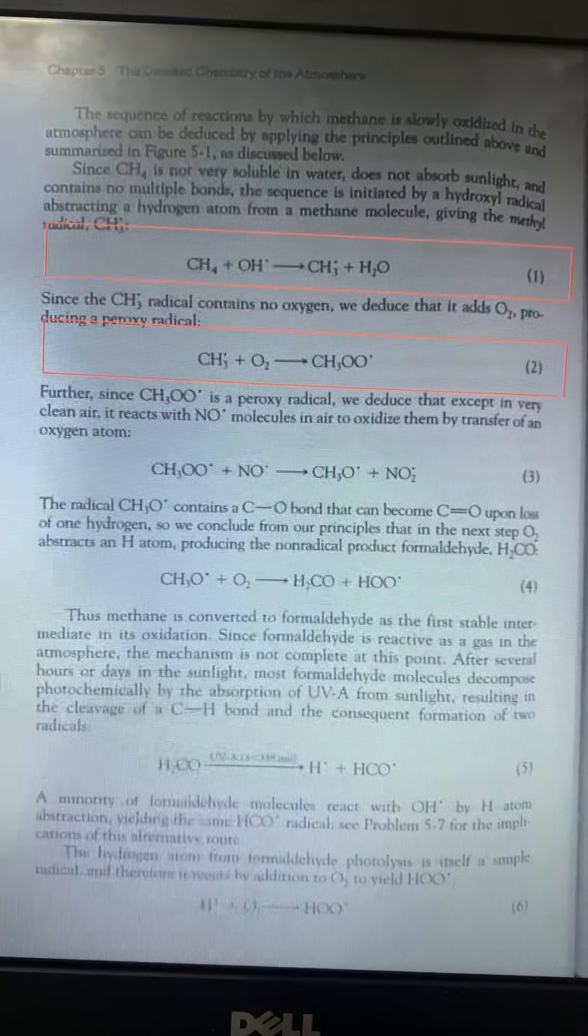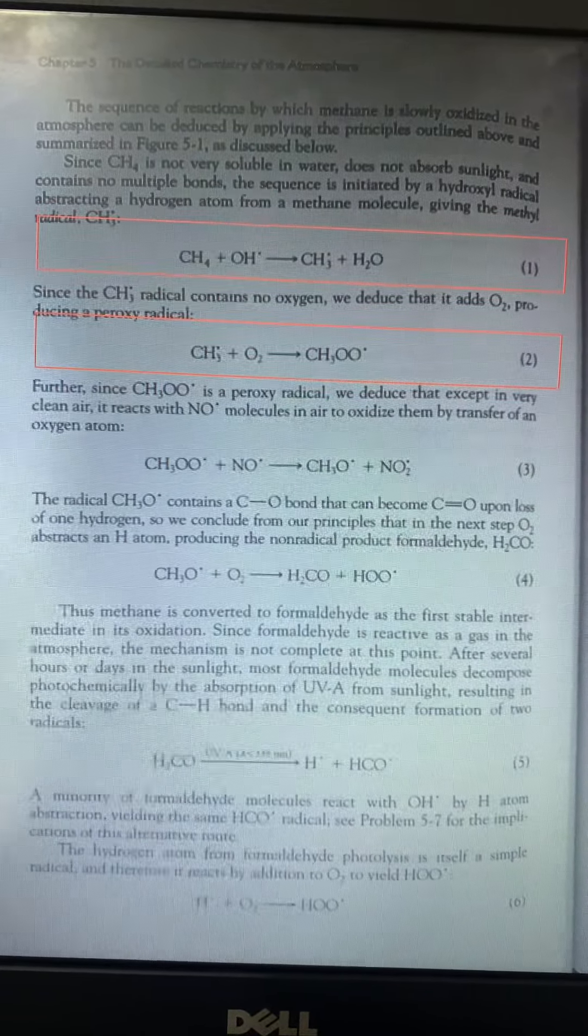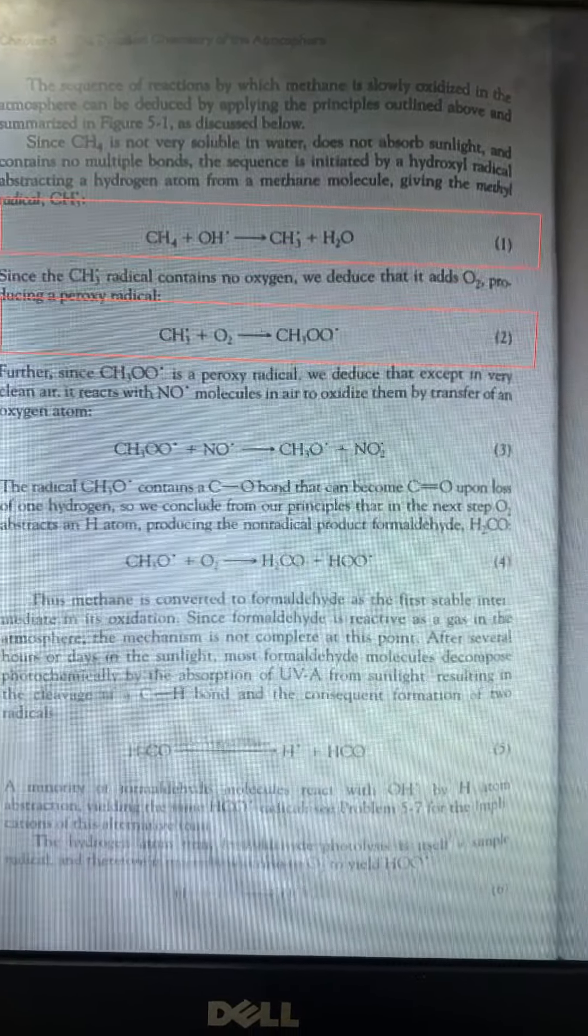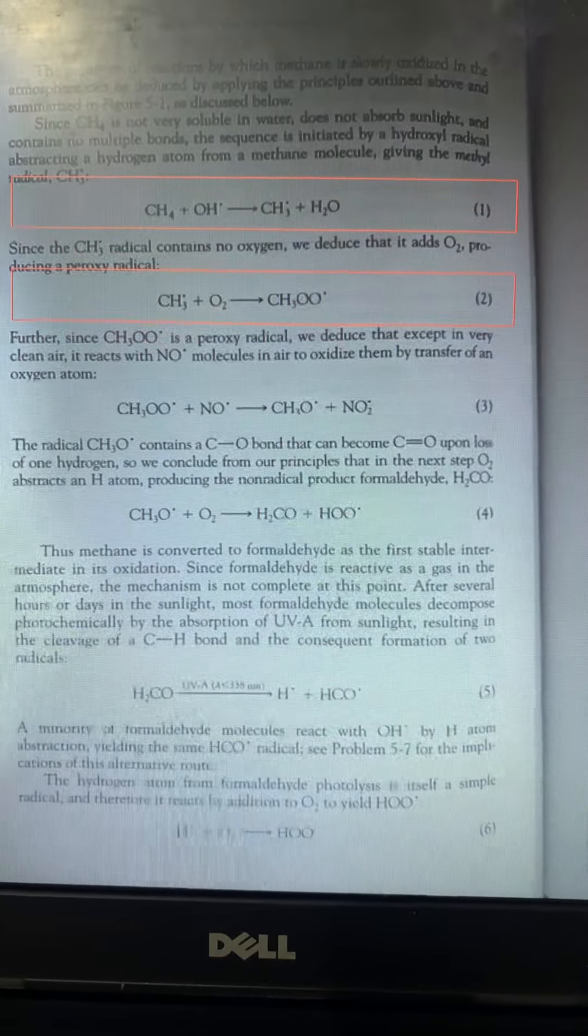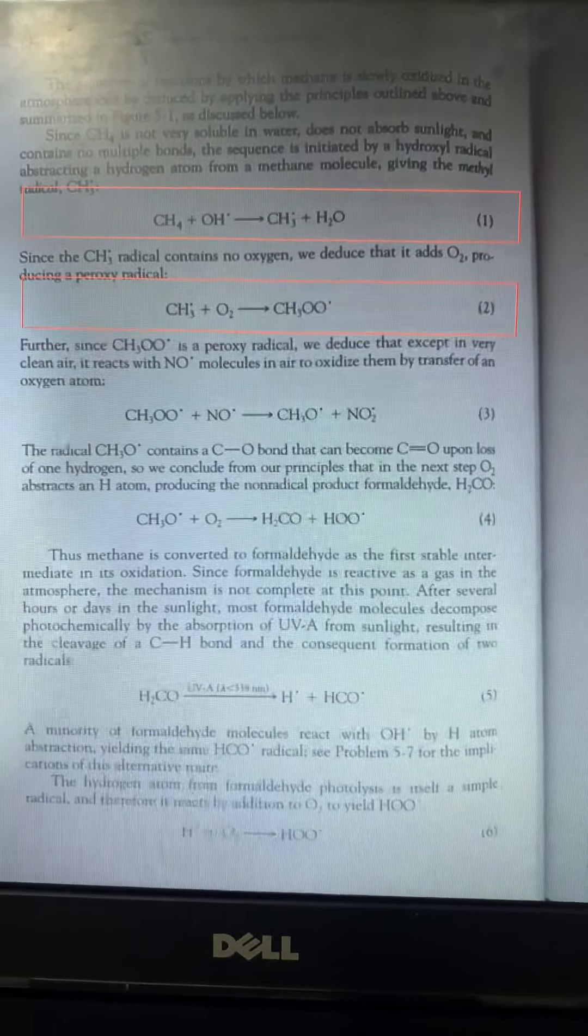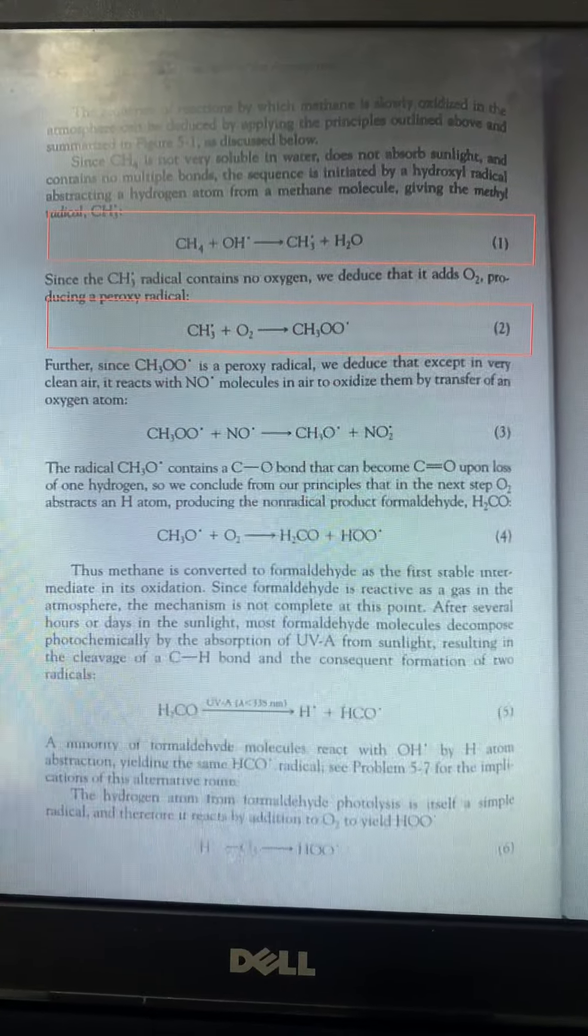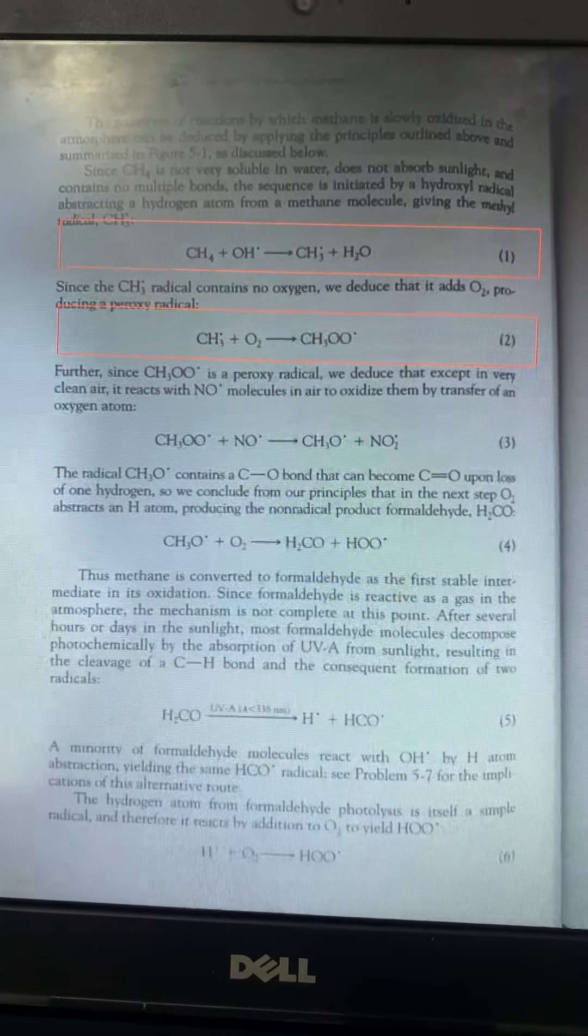In this section, CH3 radical contains no oxygen, which we deduce that it adds oxygen producing a peroxy radical. Now this methane radical, it adds oxygen within itself and produces peroxy radical. CH3 radical, CH3O2 radical.